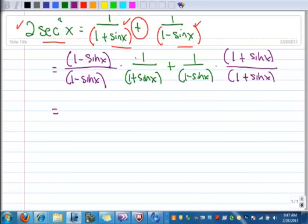So in the numerator, I've got 1 minus sine x, because that's multiplied by 1 here. And in the denominator, we did this in the last video. You can FOIL that out. You're going to end up with 1 minus sine squared x.